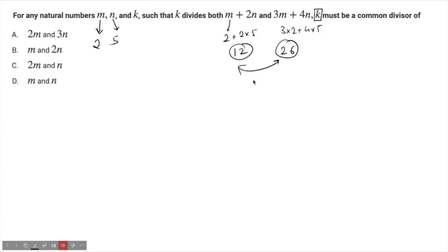That is 2. So k should be equal to 2 here. We have figured out the value of k. Now they're asking us, then k must be a common divisor of...